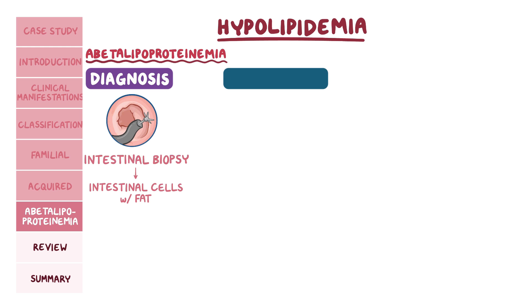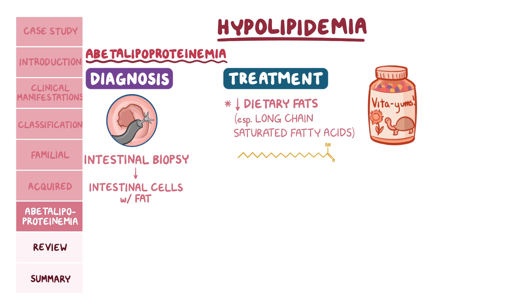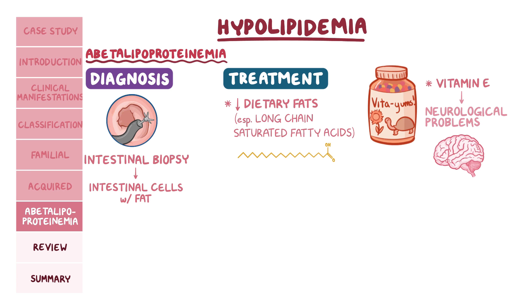The treatment of the disease is based on reducing dietary fats, especially long-chain saturated fatty acids, to reduce gastrointestinal problems. Vitamin supplements should also be taken, the most important of which are vitamin E to prevent neurological problems and vitamin A to prevent retinal damage.